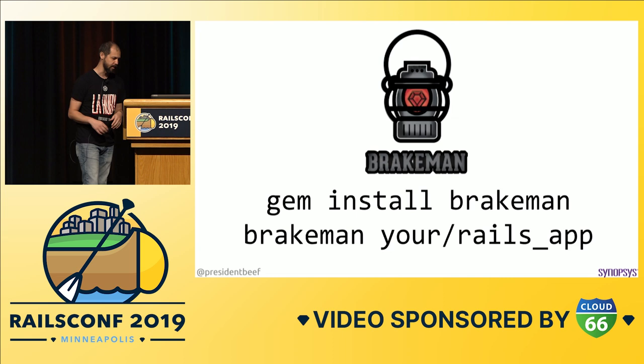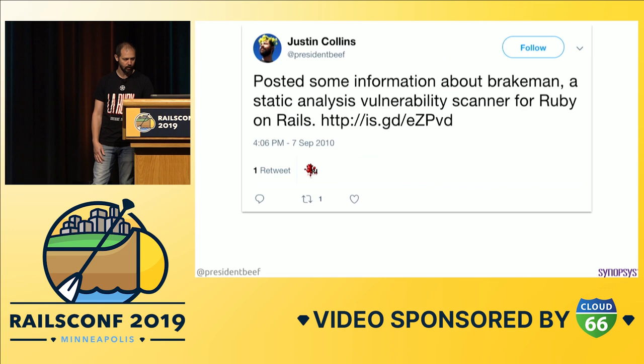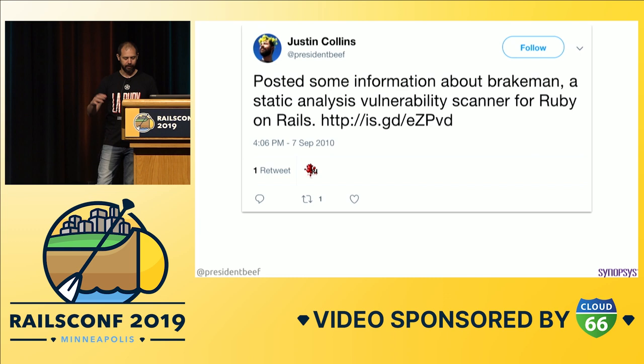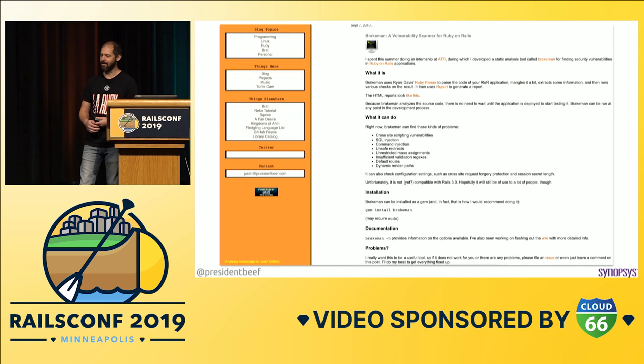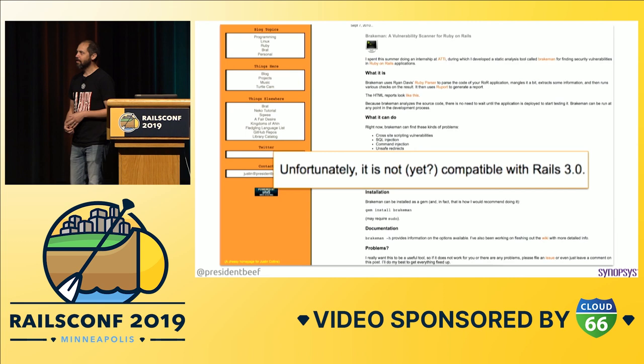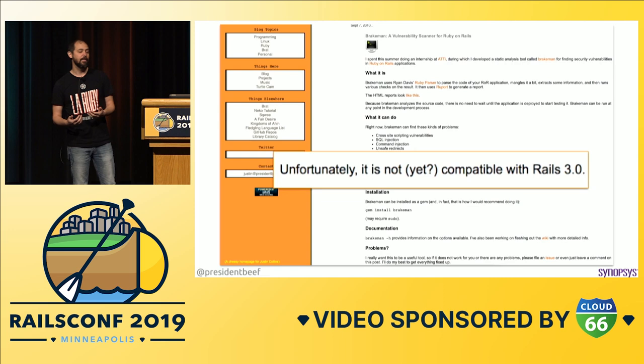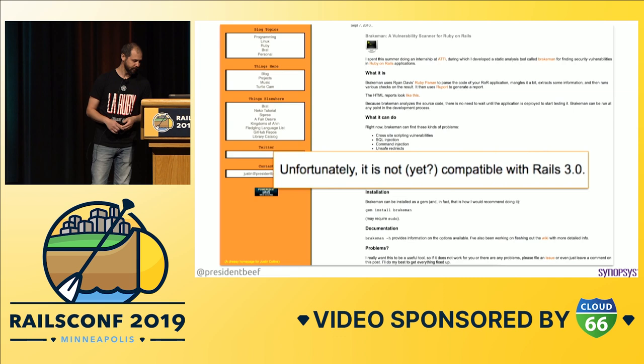I remember that conversation very clearly — it was very casual, like yeah, use MIT. I found my original tweet about it; you can tell it's old because the link isn't linkified and it uses a link shortener. This was actually a few weeks after Brakeman was released. The link goes to my blog on this wonderful website I used to have with a bunch of drop shadows. There's a line in there that says, 'Unfortunately, it's not yet compatible with Rails 3.0,' because Rails 3.0 was released a week after the first version of Brakeman was released.